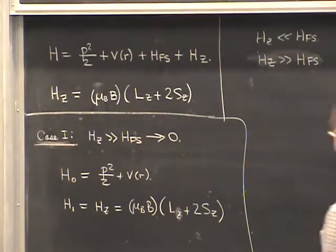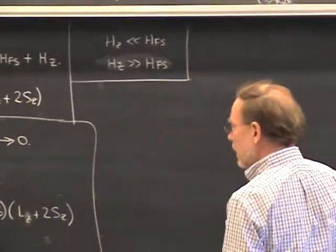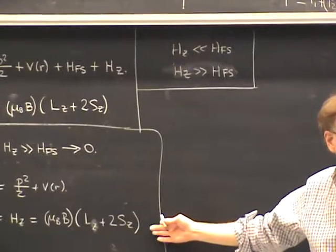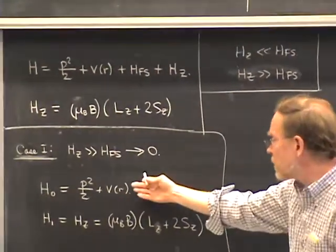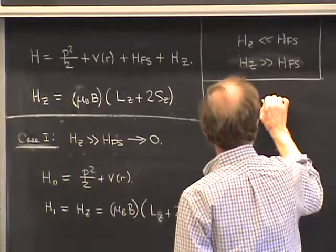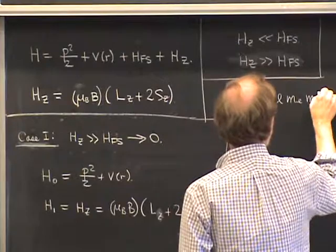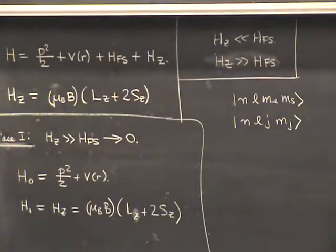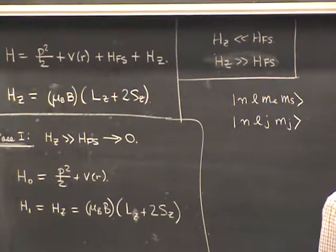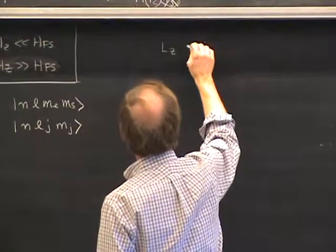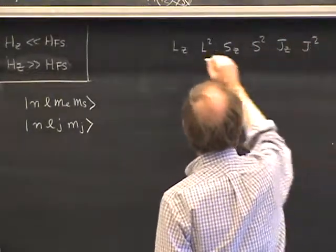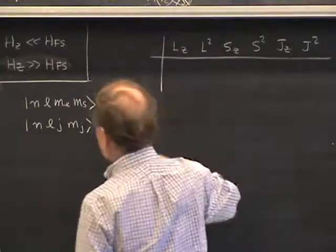For Case 1: strong magnetic field, ignore fine structure. Set H₀ = p²/2 + V(r) and H₁ = H_Zeeman = μ_B B (L_z + 2S_z). This is unrealistic for laboratory fields but gives a useful reference case. H₀ is degenerate — for hydrogen the n-level has 2n² states (factor of 2 from spin). We need to choose a good basis to diagonalize H₁ without explicit matrix diagonalization.